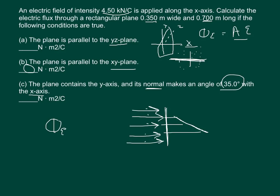Let's go back. The area is 0.35 times 0.7, the area equals 0.245 meters squared. The electric field is equal to 4.5 kilonewtons per coulomb, so 4,500 newtons per coulomb. So for number 1, the electric flux is going to be 1,102.5.